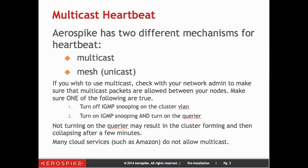When taking a look at multicast, if you are using the multicast heartbeat mechanism, you have to make sure that your network supports this. Check with your network admin to make sure of that. The two ways people have done this are: number one, turn off IGMP snooping — some people don't like to do that — or instead, turn on IGMP snooping and make sure that the querier is turned on. If you don't do this, you might find that the cluster will form properly but then after a few minutes dissolve again. If that is a symptom, it probably is the querier that is the issue. Note that many cloud services such as Amazon AWS do not allow for multicast.